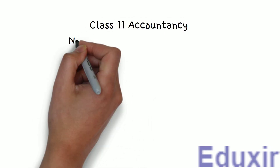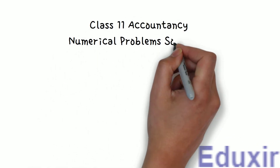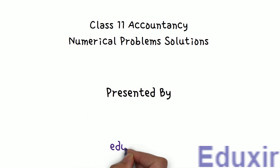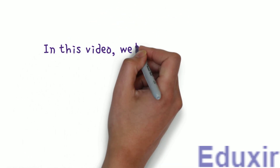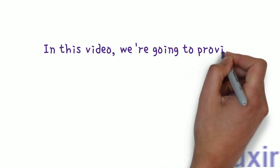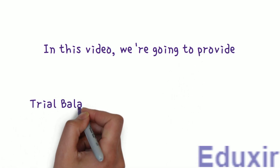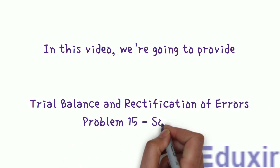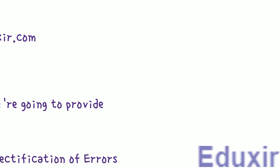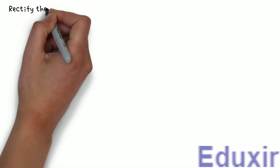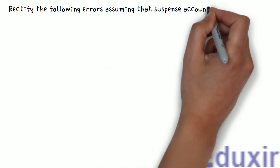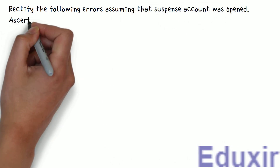Class 11 Accountancy Numerical Problem Solutions presented by eduxir.com. In this video, we are going to provide Trial Balance and Rectification of Errors — Problem 15 solution. The problem statement is as follows: Rectify the following errors assuming that a suspense account was opened. Ascertain the difference in trial balance.